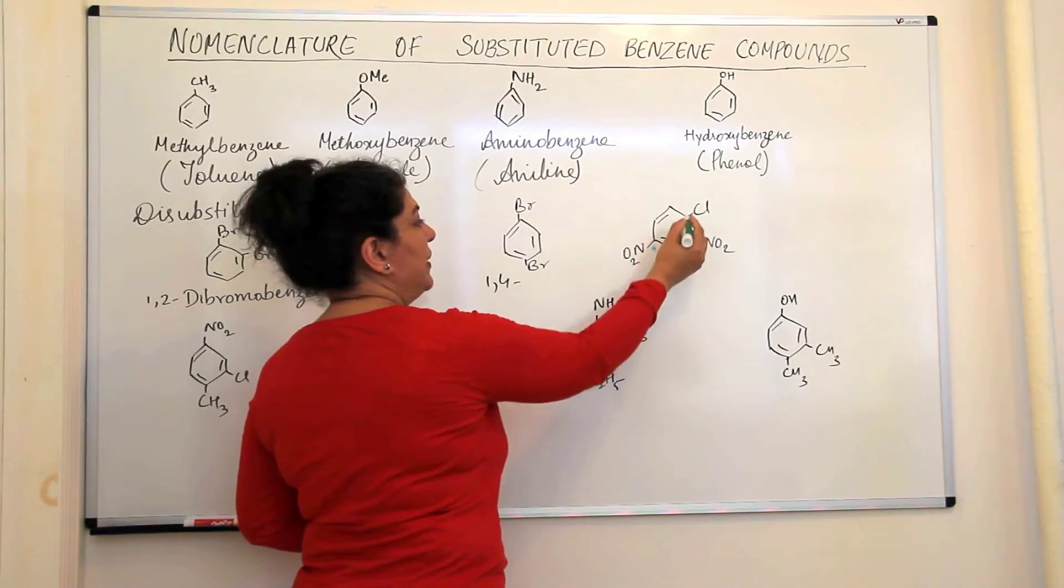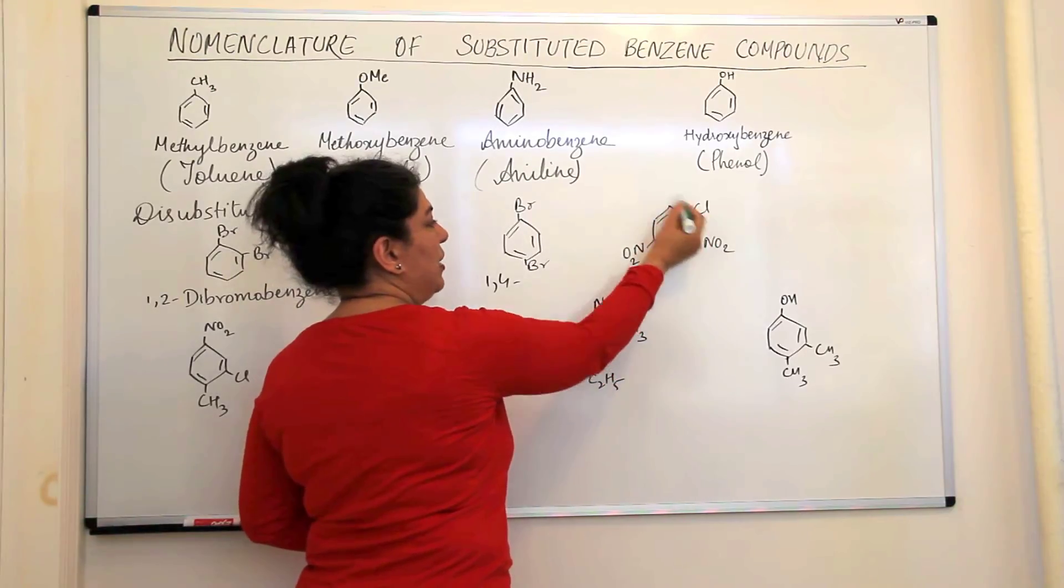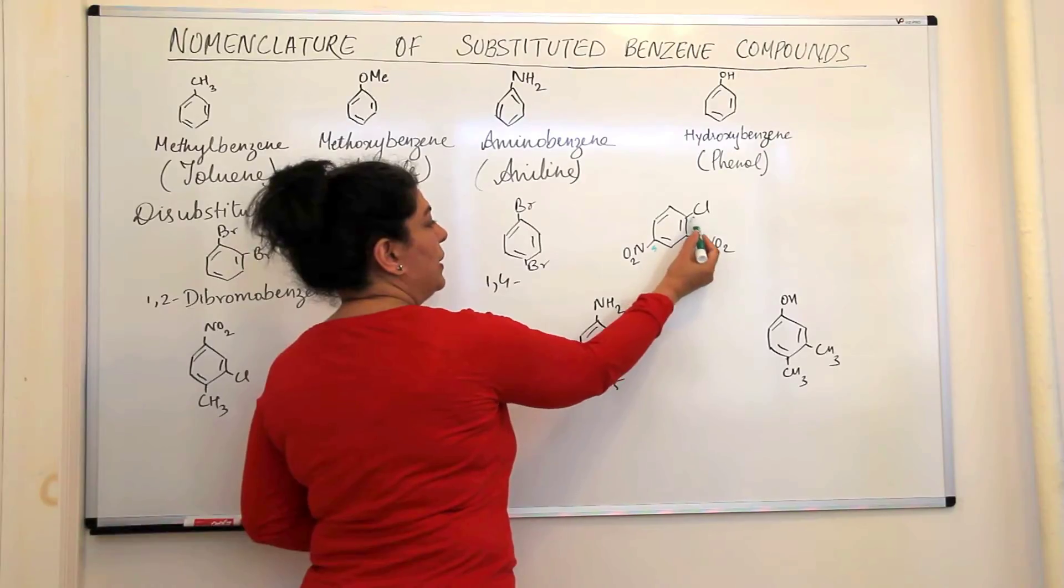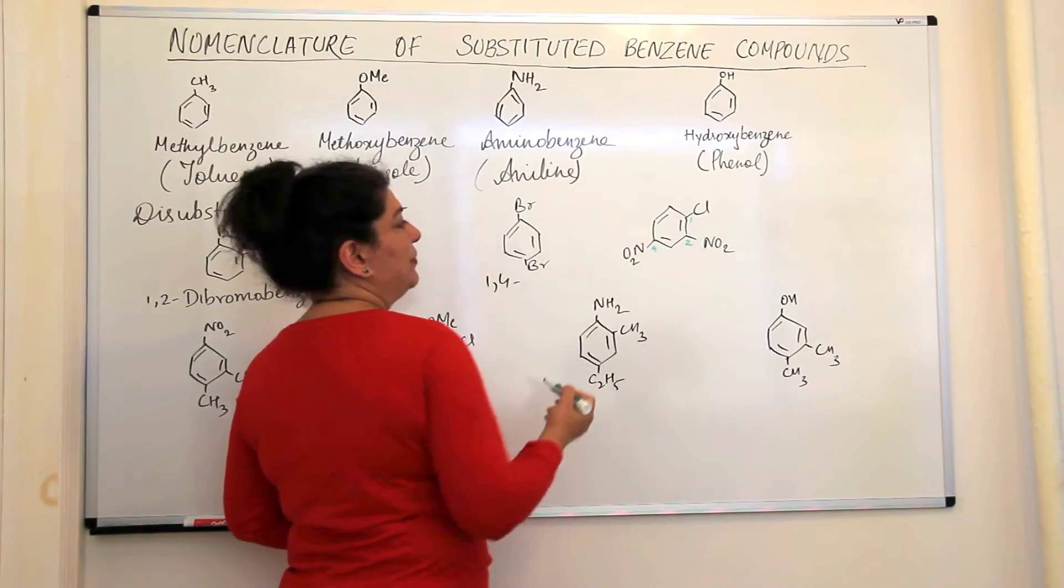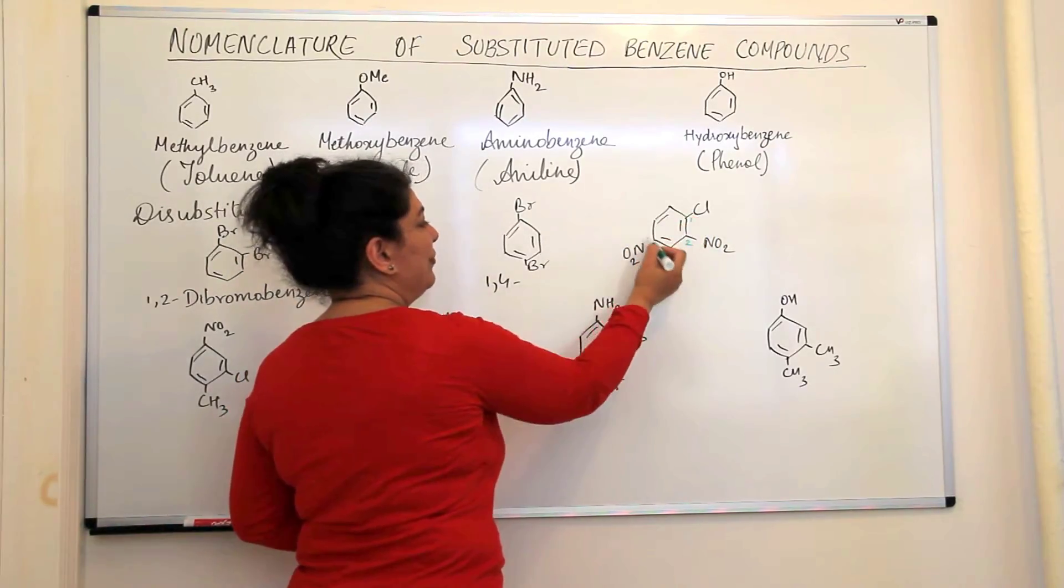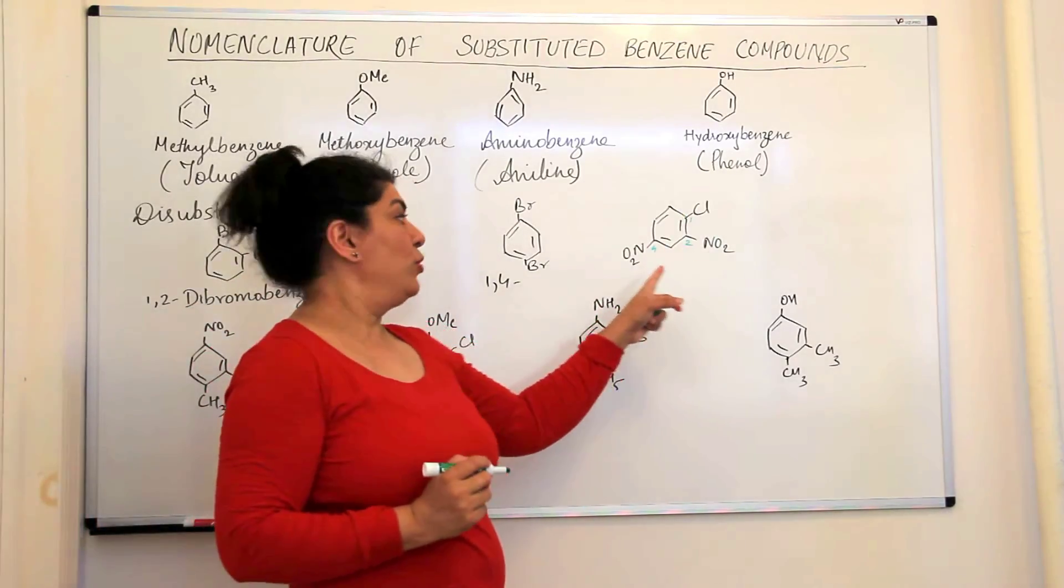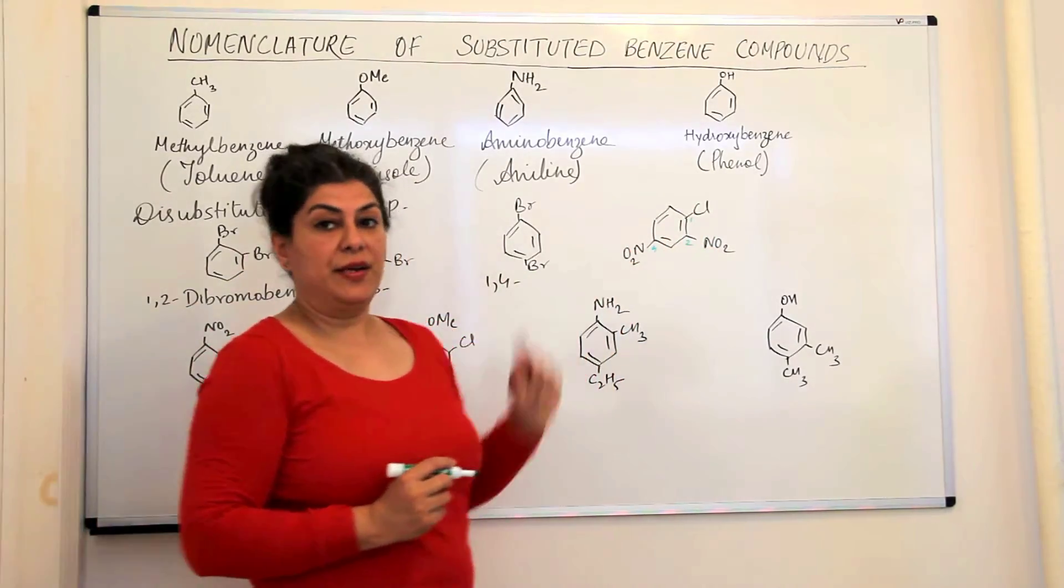If I tried to count in this direction, it would have been different. If I counted from here, if I treated this as the first carbon, this would be one, two, three, four, five. One, two, five. But no, one, two, four is a lower sum of locants. Therefore, this numbering is correct.